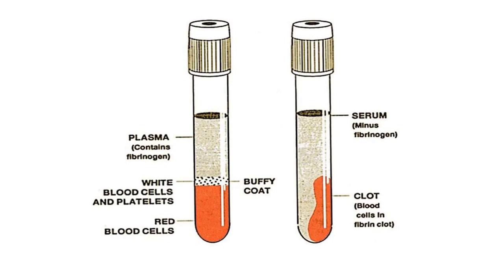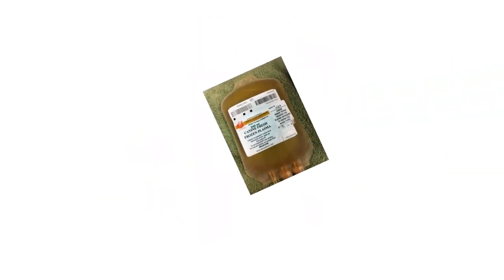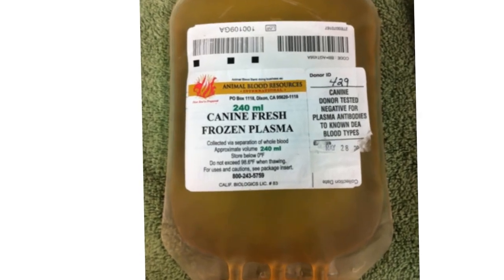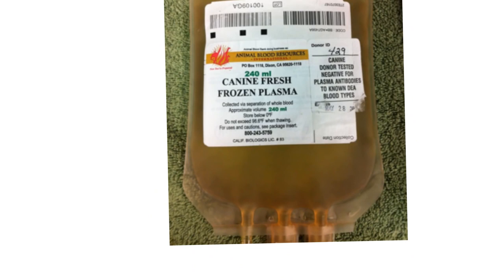A lot of times when you spin blood, the clot will go down and fill the whole volume at the bottom, similar to the plasma side. This picture shows dog plasma that can be used for a transfusion — this happens to be 240 mils, which is also 240 cc's. It has been collected aseptically to the best of their ability and is ready for a plasma transfusion.